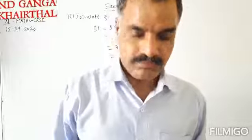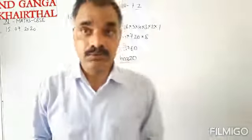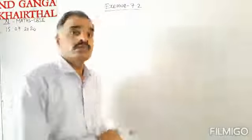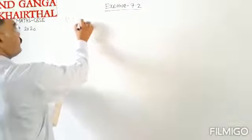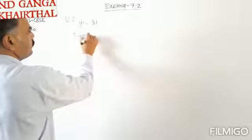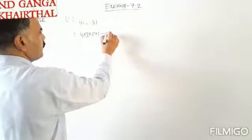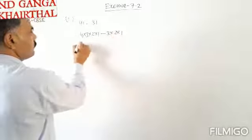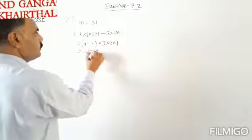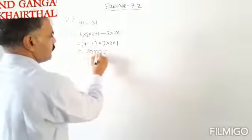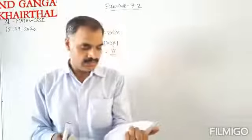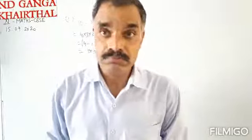Now finding the value of factorial 4 minus factorial 3. Factorial 4 can be written as 4 into 3 into 2 into 1, minus 3 factorial which is 3 into 2 into 1. Taking 3 into 2 into 1 common, we get 3 into 2 into 1 into 4 minus 1, so 3 factorial into 3, which is 6 into 3 equals 18. So factorial 4 minus factorial 3 equals 18.